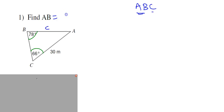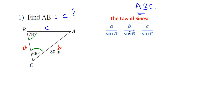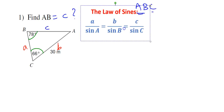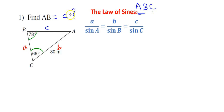We need to find the value of lowercase c. Let us also label the other information: the side opposite to angle A is lowercase a, which is the measure of BC. The 30 meters is the measure of AC, which is lowercase b. Now, looking at our Law of Sines formula, the measure of A and angle A are not given, so I will not use the first ratio.